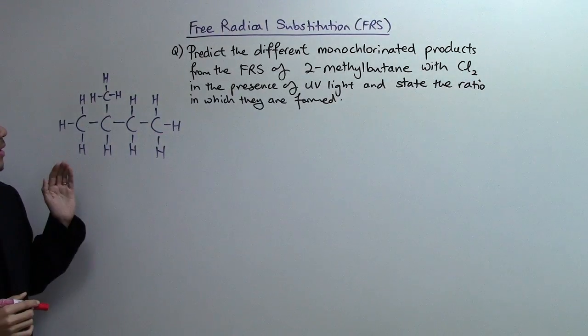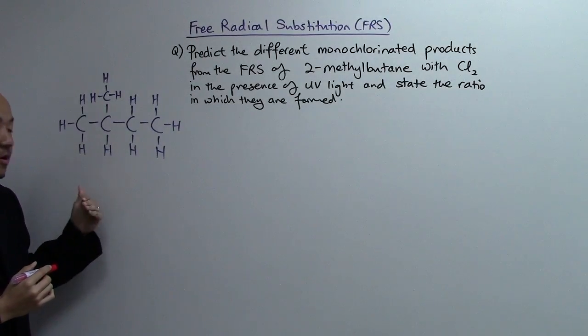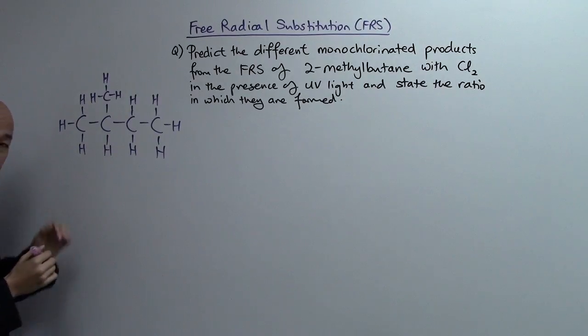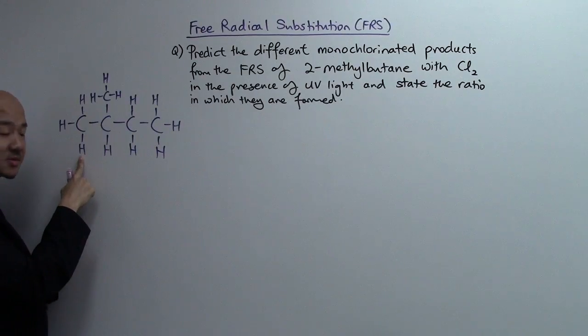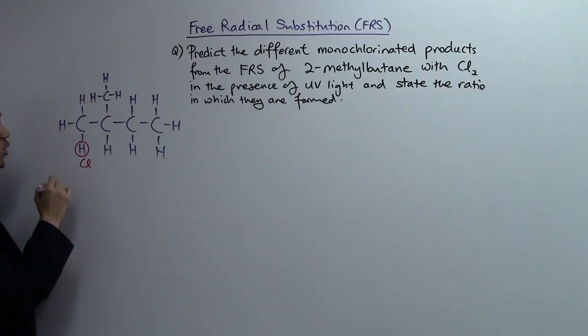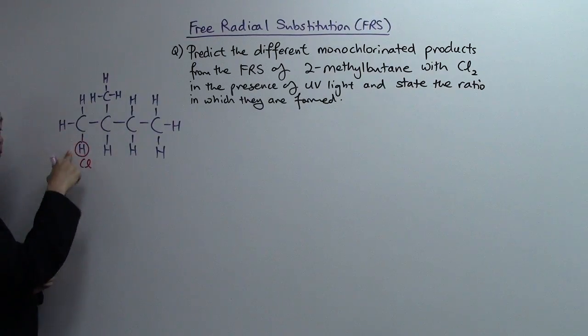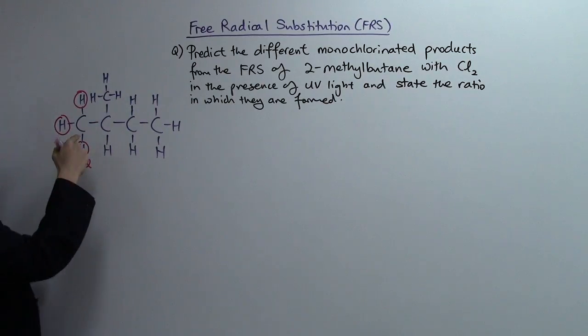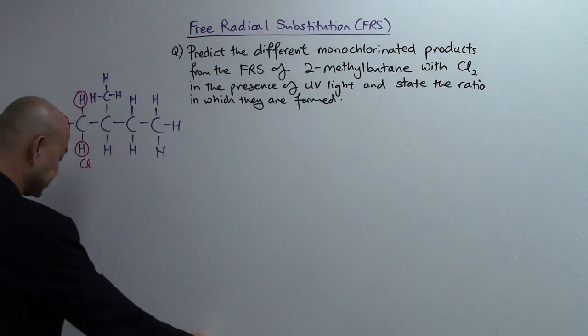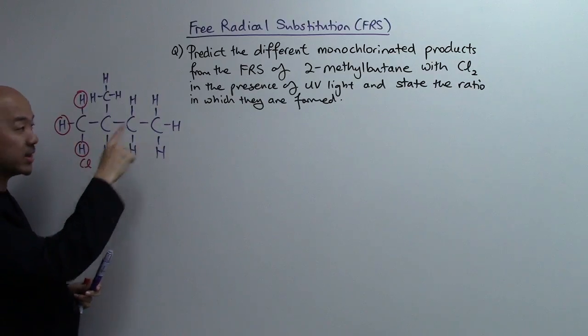Alright, now when we do monochlorination you're going to have different compounds that are formed which we're going to call isomers. So let's take a look if this hydrogen atom is being replaced, substituted by chlorine atom. I hope you agree with me that the chlorine atom will also be able to substitute this hydrogen atom and these three hydrogen atoms, they are all the same. Alright, so for this one we will then call it 1-chloro-2-methylbutane and I'm going to draw the structure.